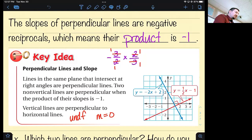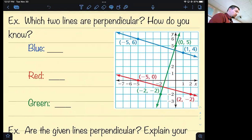So the slopes of perpendicular lines are negative reciprocals. We left off on this example. It says which two lines are perpendicular, and we said for sure not the red and the blue lines. What we're going to do is find each line's slope and determine which slopes are negative reciprocals of each other.